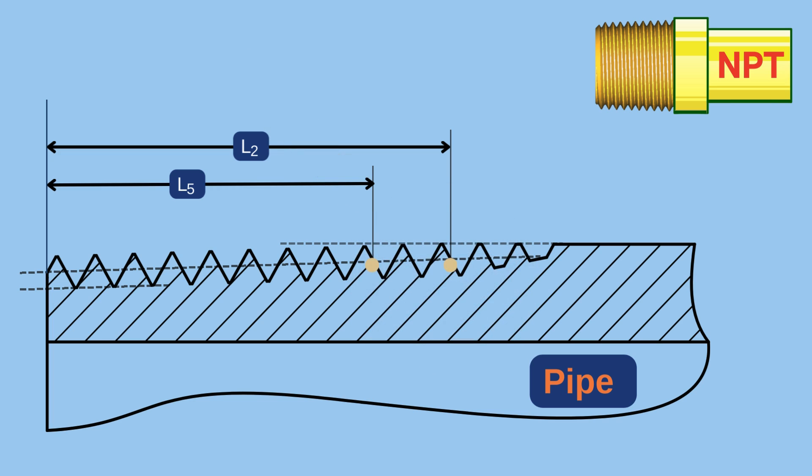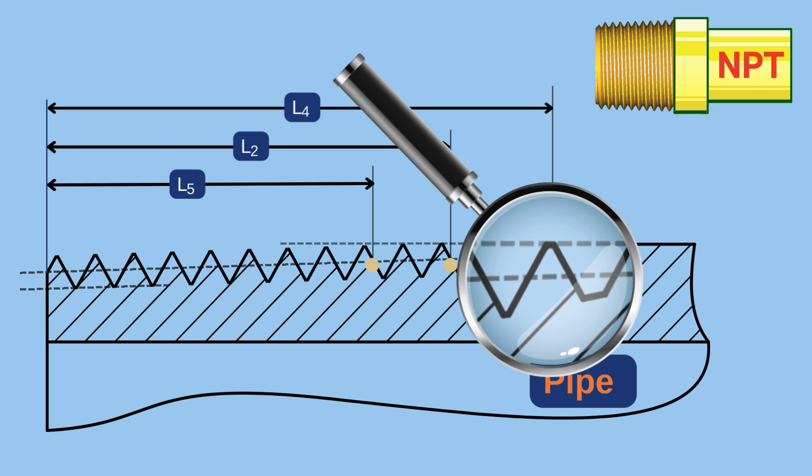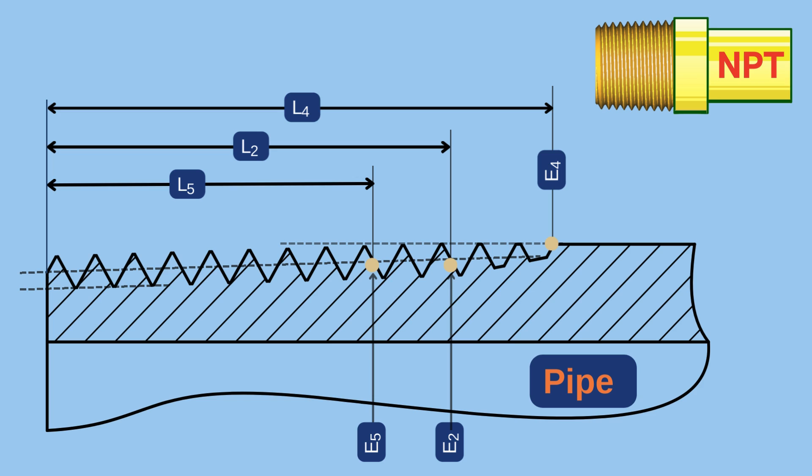Finally, the thread length is L4, where the threads disappear due to the taper angle. E2, E5, and E4 indicate the pitch diameter at each point respectively.